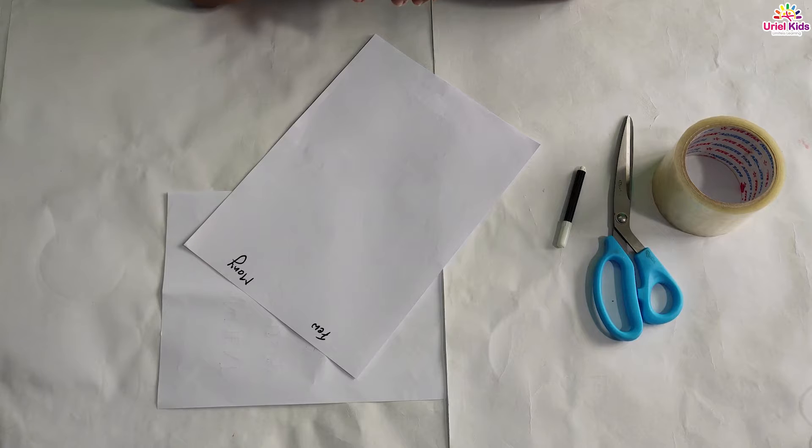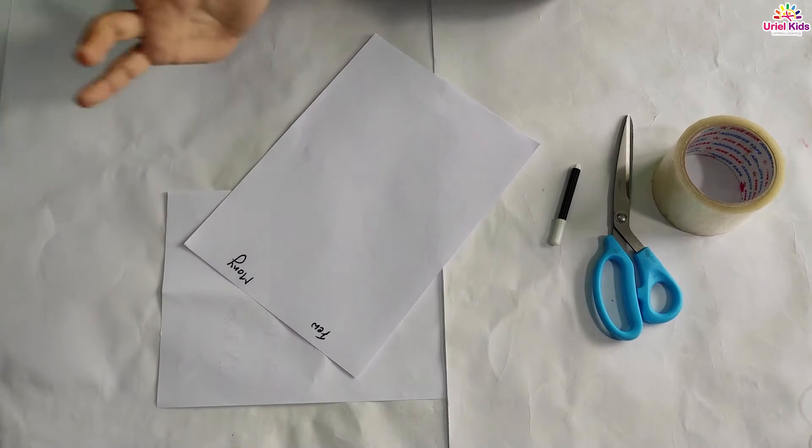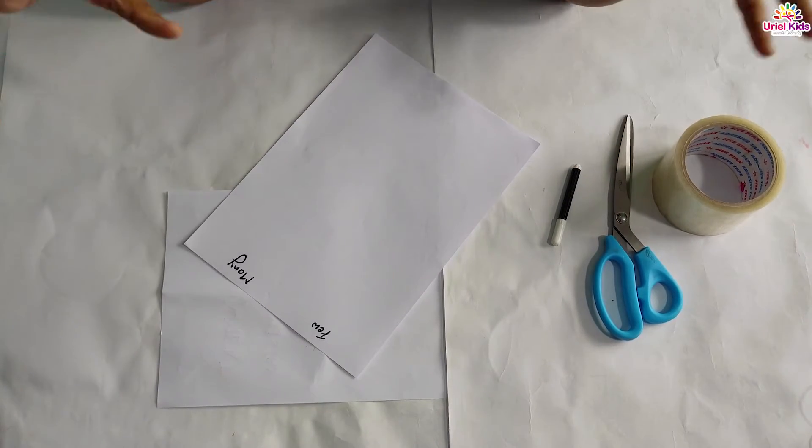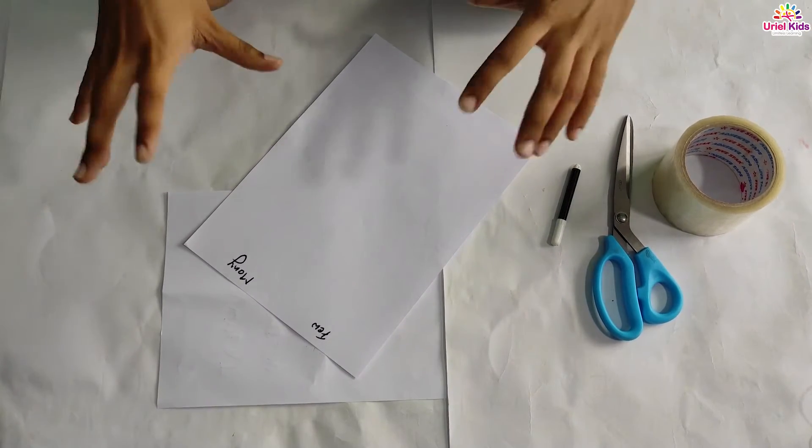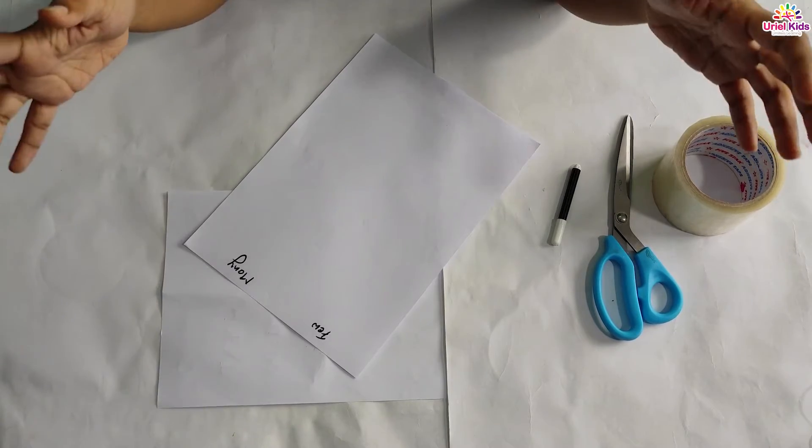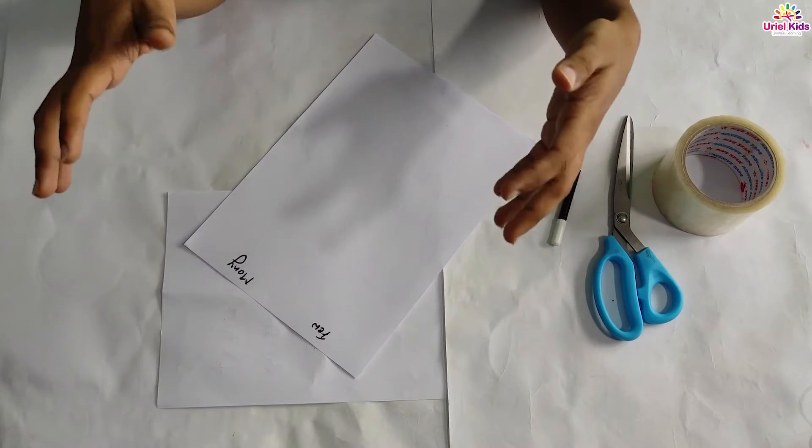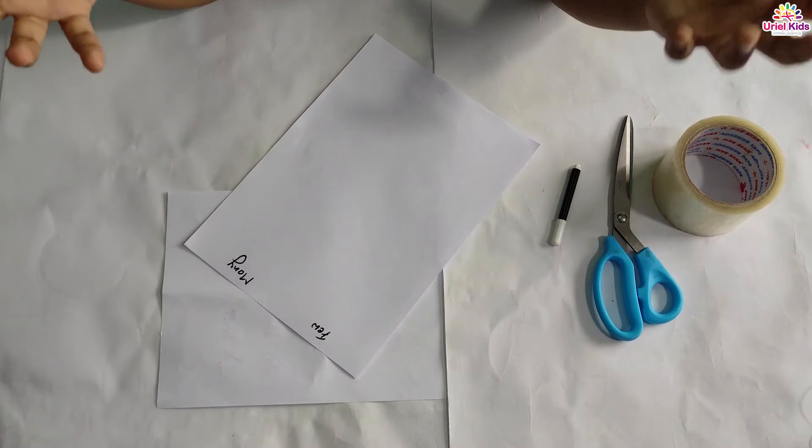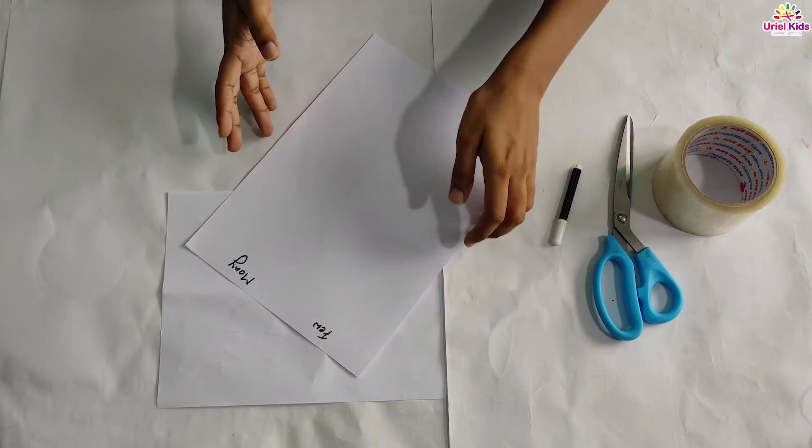Hello my munchkins and dear parents too. Today we are going to do an activity where I need complete support from the parents also. So what we are going to do is we are going to learn about the concept of few and many with the help of the things that we can stick on a paper or we can show it in a tabular column.